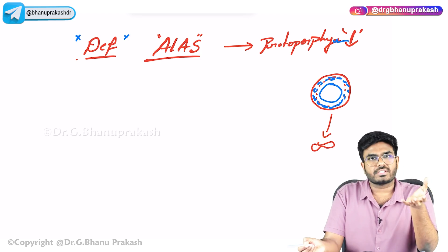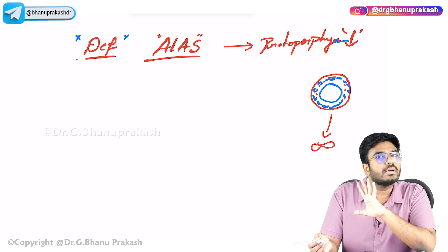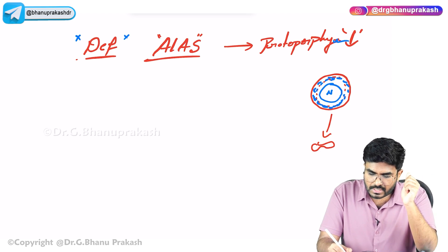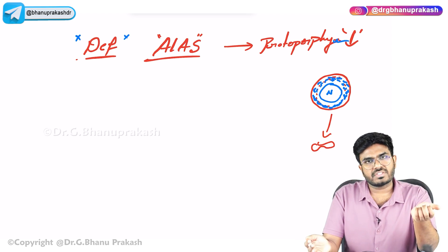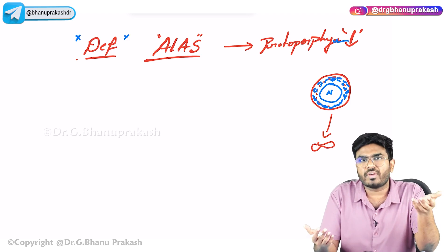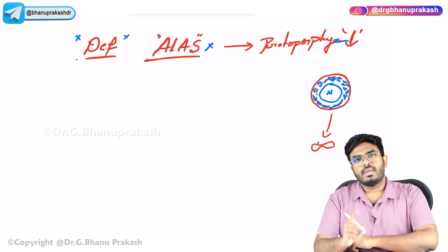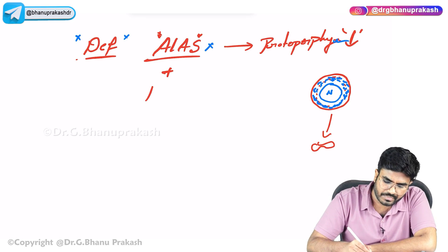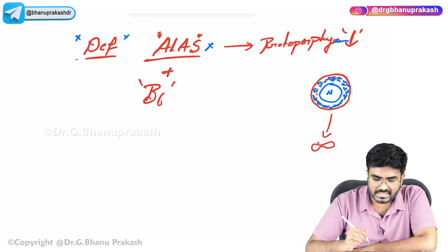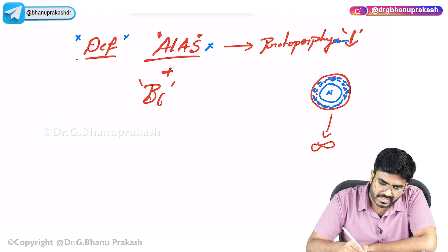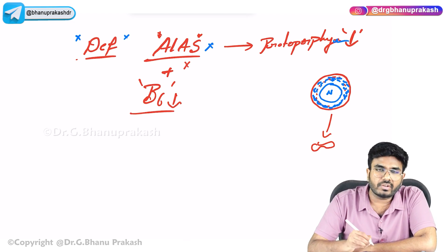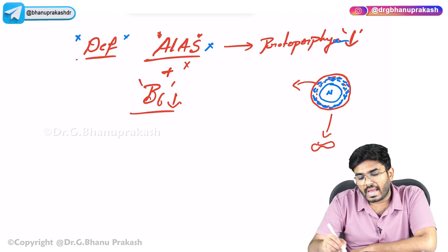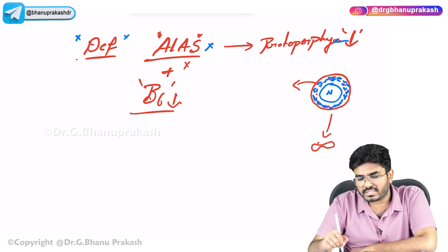In these immature cells (erythroblasts), the mitochondria surround the nucleus. With iron accumulating in the mitochondria around the nucleus, these iron-laden cells are called ringed sideroblasts. The iron cannot be used because there is no protoporphyrin for it to bind.